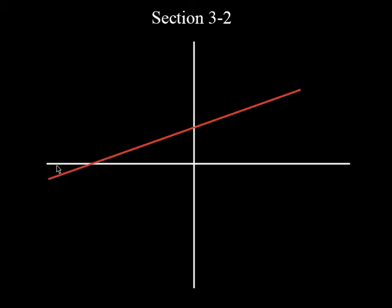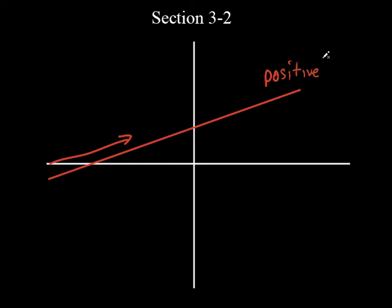You're going up the hill, right? So you're going up. Any line that is slanted from left to right, if it's going up, we call this a positive slant — but we don't call it a slant in math. What do we call it?